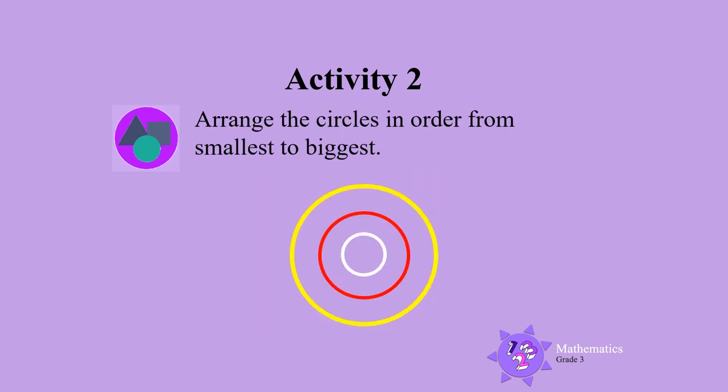Next, let's arrange the circles in order from smallest to biggest. Are you ready? The white circle is the smallest and the yellow circle is the biggest. Well done!